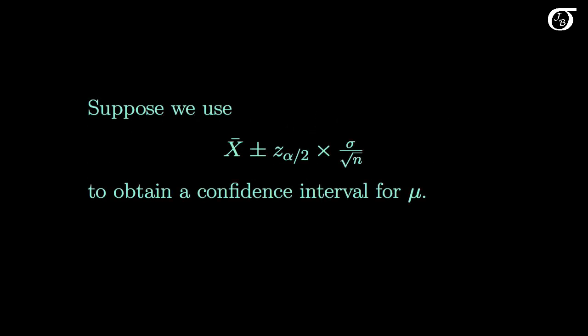Suppose we use this confidence interval formula to obtain a confidence interval for the parameter mu. This would be the appropriate method if we were sampling from a normally distributed population where the population standard deviation sigma is known. Properly interpreting the resulting interval is an important part of the analysis.